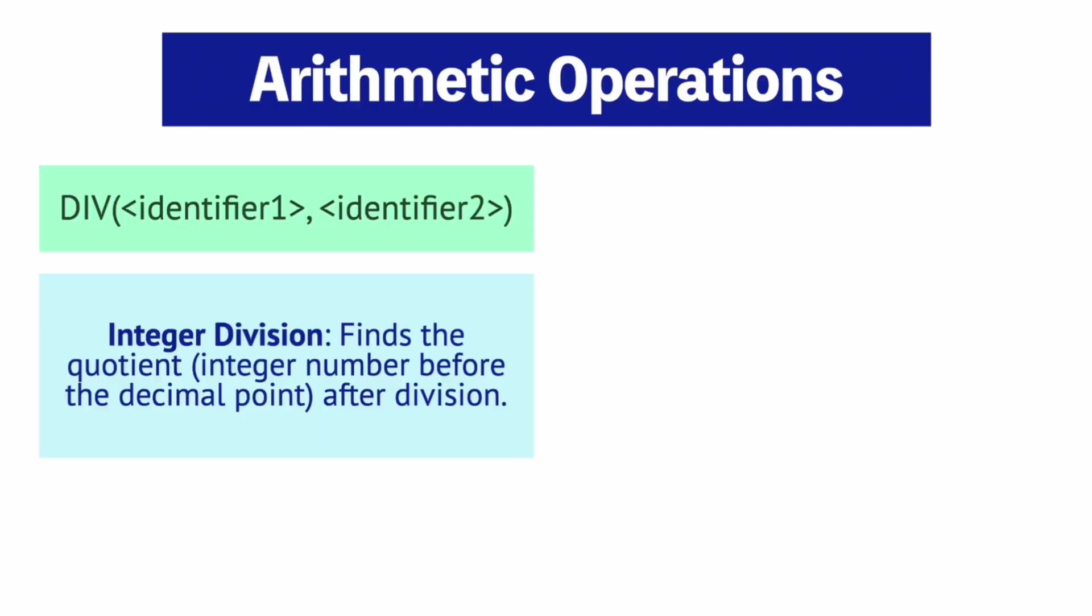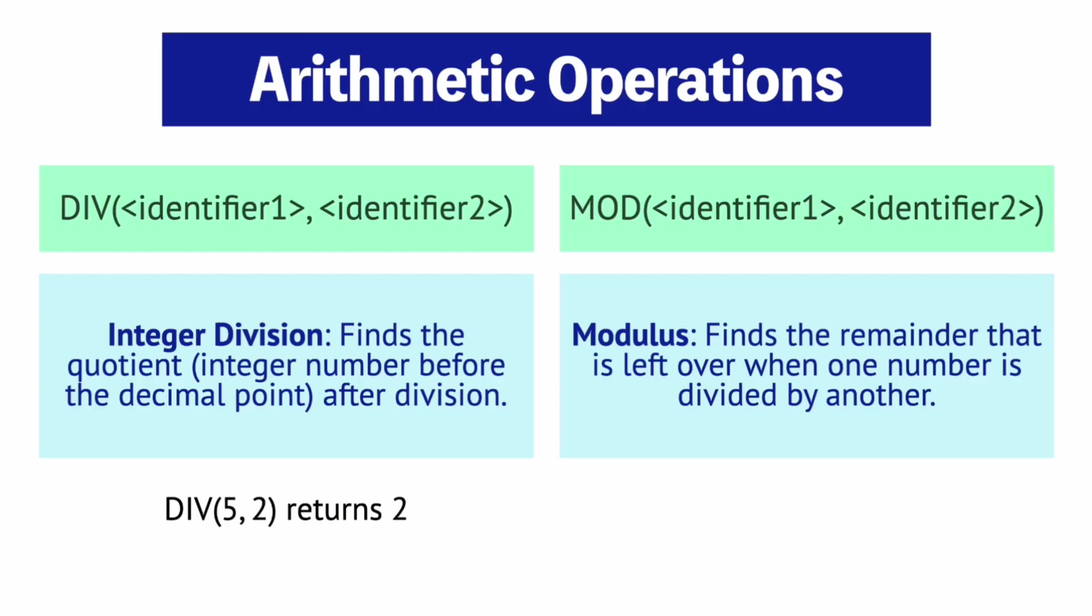Another operation that you have to know is the DIV operation or integer division which finds the integer result after division and discards any decimal numbers. For example, 5 divided by 2 is 2.5, right? However in integer division the 0.5 is dropped leaving us with just the value 2. There's also the modulus or MOD operation which returns the remainder after the division of two numbers. For example, 5 MOD 2 gives us 1 since that's the remainder after 5 is divided by 2.